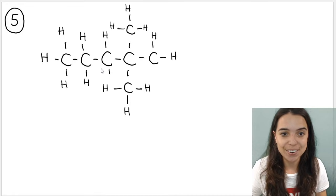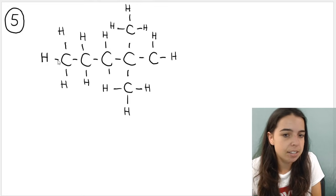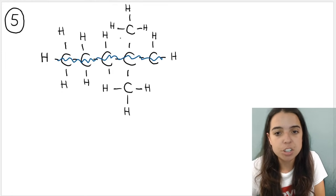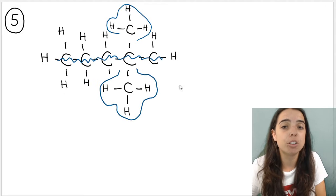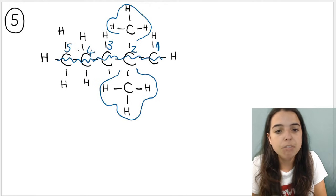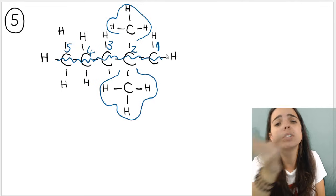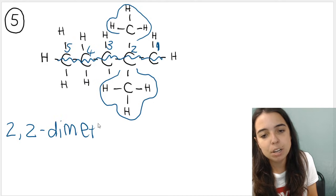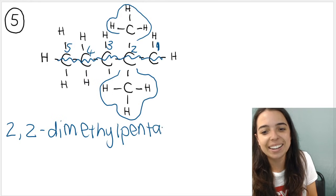Our last example for this video. The main chain is five carbons: one, two, three, four, five. I number the carbons so that the branches have the lowest number — from right to left makes sense, so one, two, three, four, five. The branches are on carbon two. Numbering the other way would put them on carbon four, and two is lower than four. So the name is 2,2-dimethylpentane.